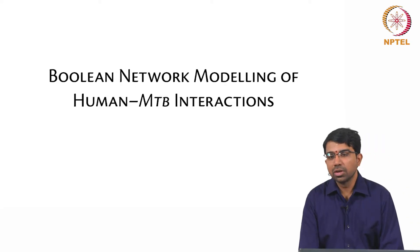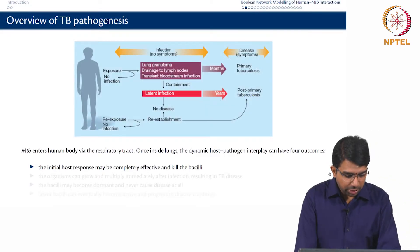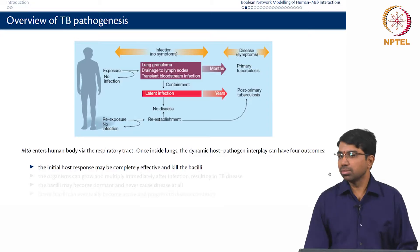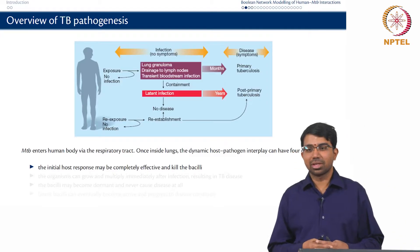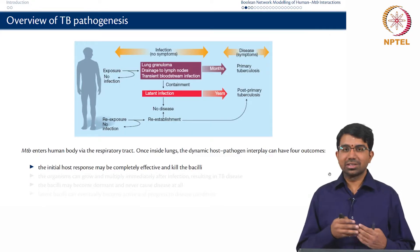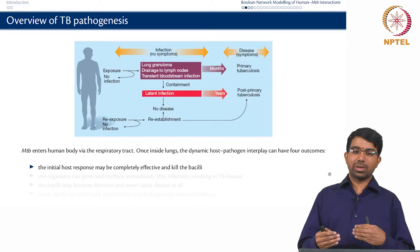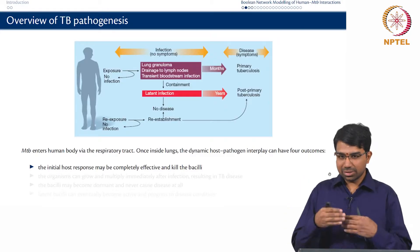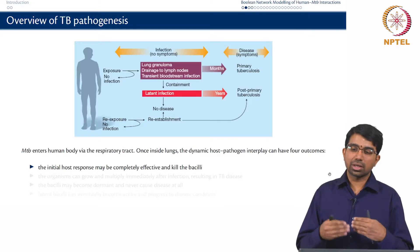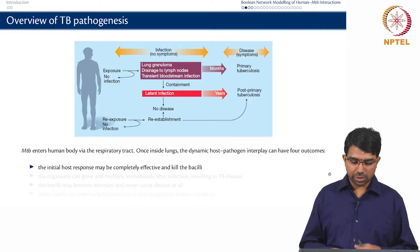Let us look at Boolean network modeling of human-Mycobacterium tuberculosis interactions. How does the infection happen? The TB organism enters the human body via the respiratory tract. Once inside the lungs, there is a very interesting cat-and-mouse game. There is an immune response by the host, a defense by the pathogen, a counter-response by the host, and a counter-response by the pathogen — they keep exchanging blows. There are different molecules and molecular species in both host and pathogen involved in this very interesting game.